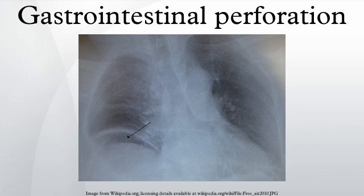Diagnosis: On X-rays, free gas or air may be visible in the abdominal cavity. The perforation can often be visualized using computed tomography. White blood cells are often elevated. Visible signs can occasionally include a rigid abdomen on palpation.